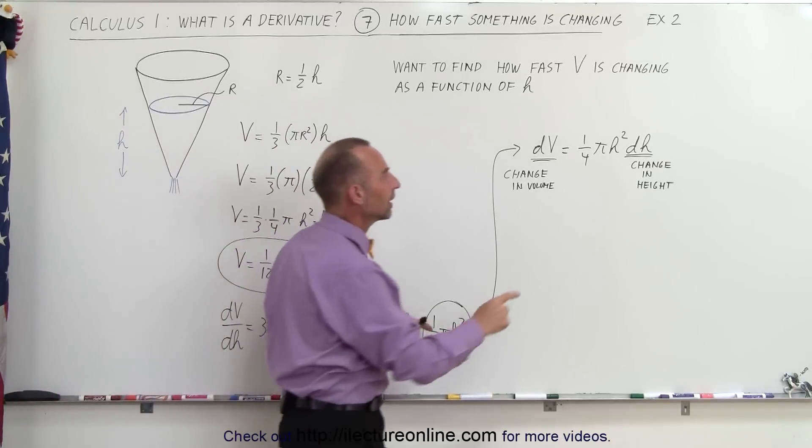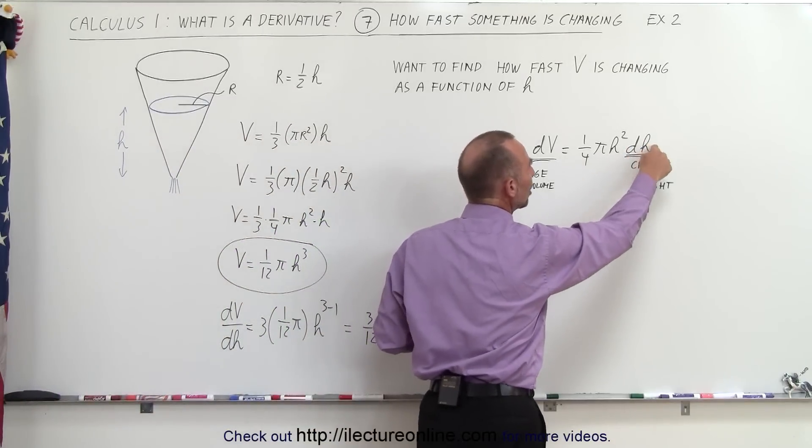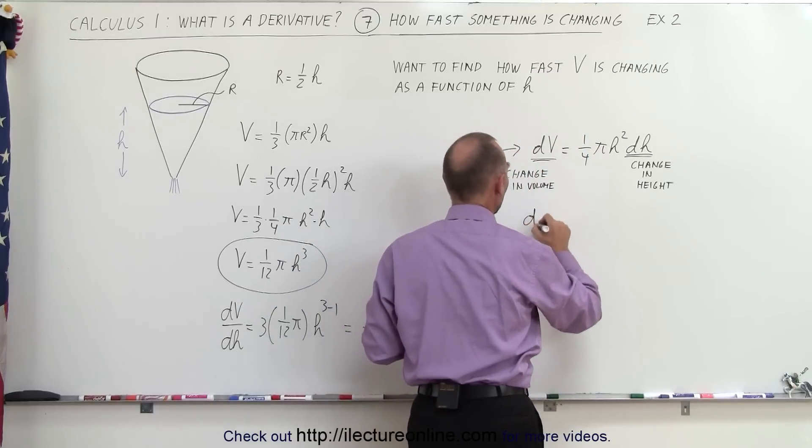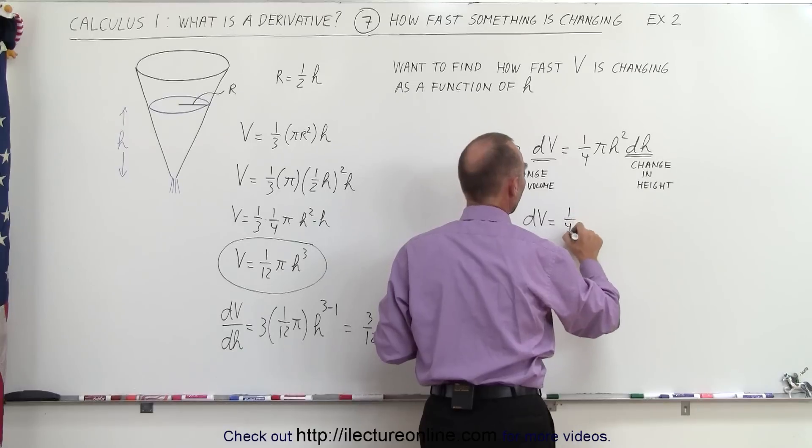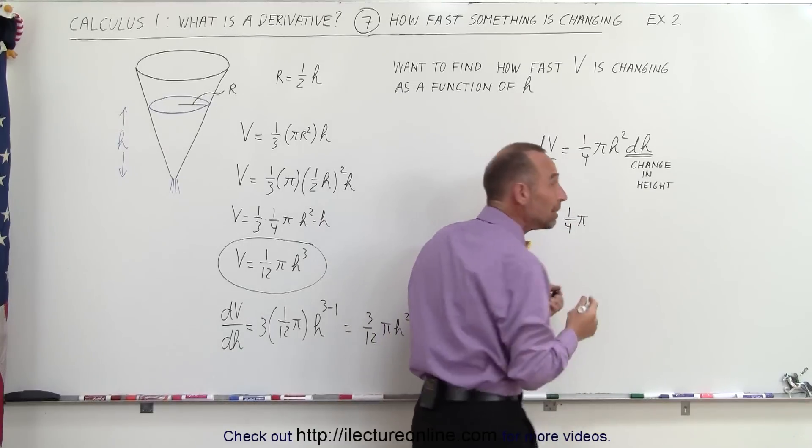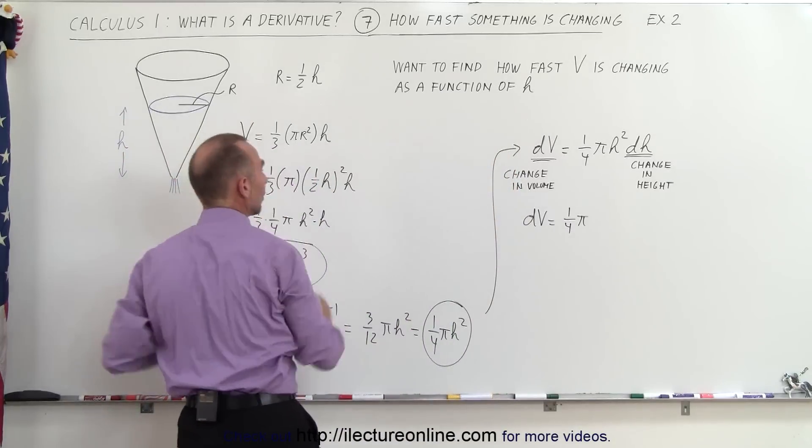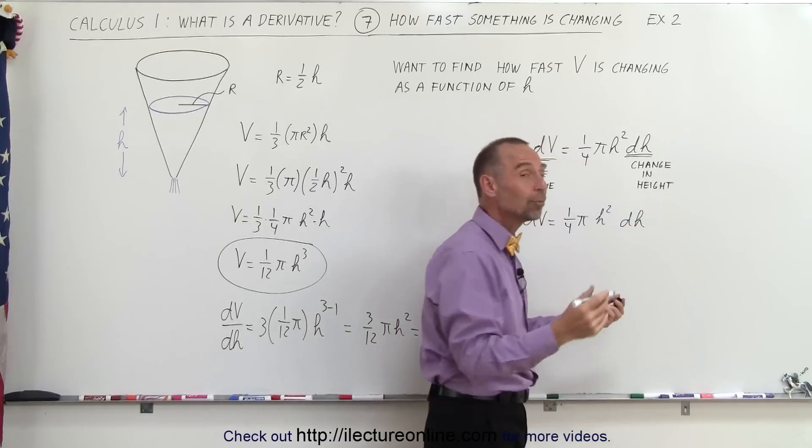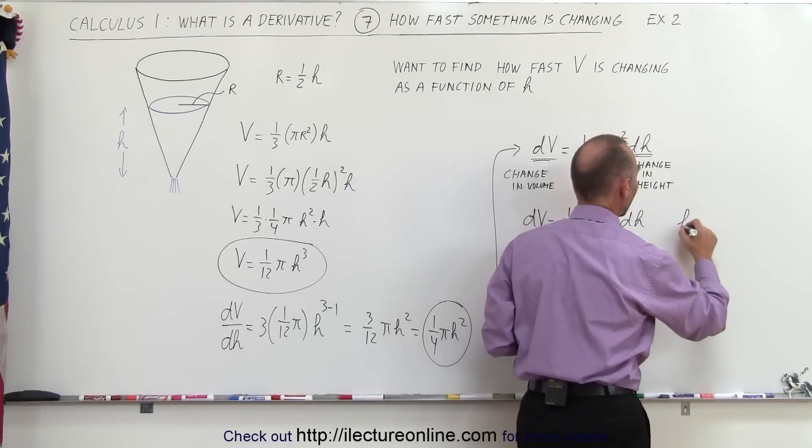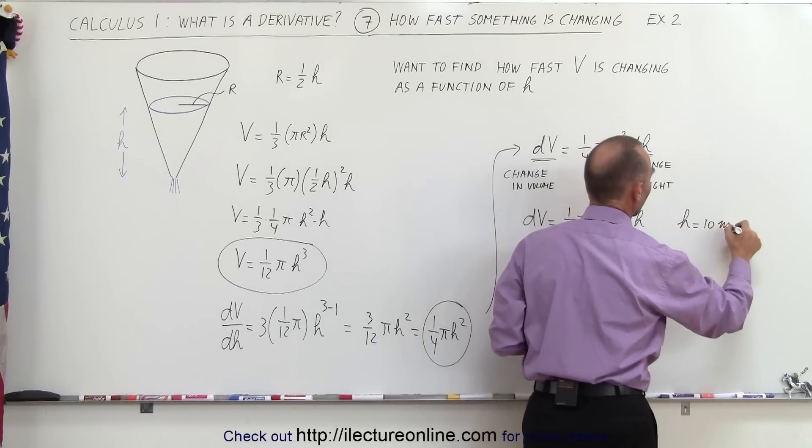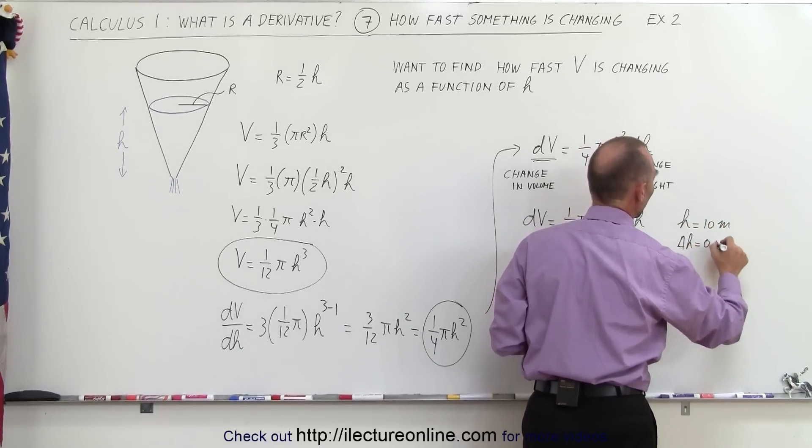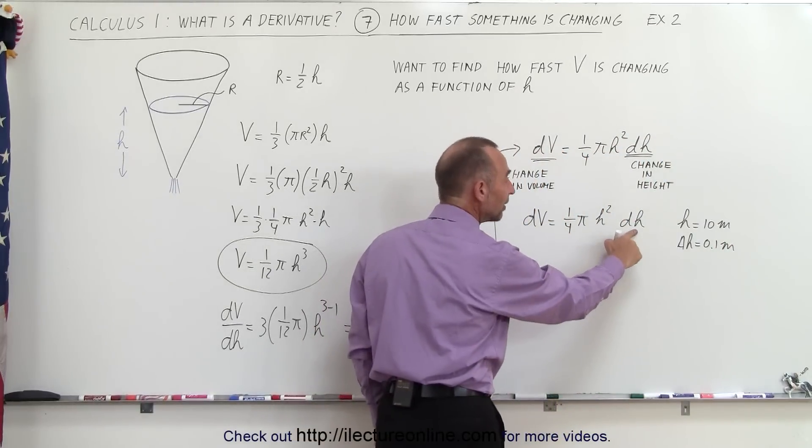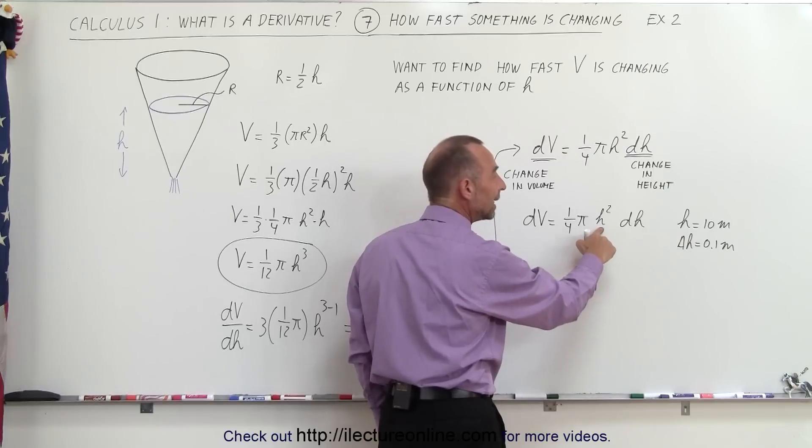Now, what we can say is, for a particular height and for a particular change in the height, we can find the change in the volume. So the change in the volume is equal to one-quarter π times the height at any moment in time. So let's say that the height was h right there. So it would be h² times the change in the height. Let's put some numbers in there. Let's say that the height was equal to 10 meters and that the change in the height was equal to 0.1 meter.